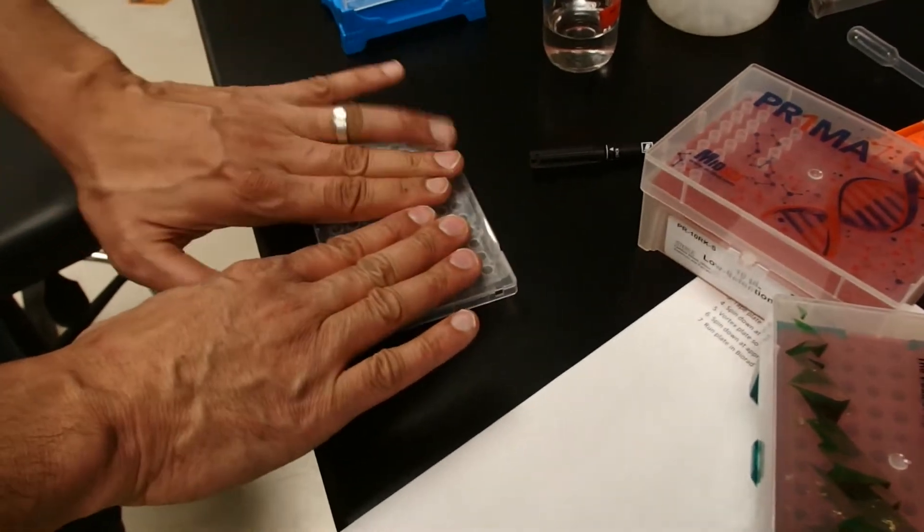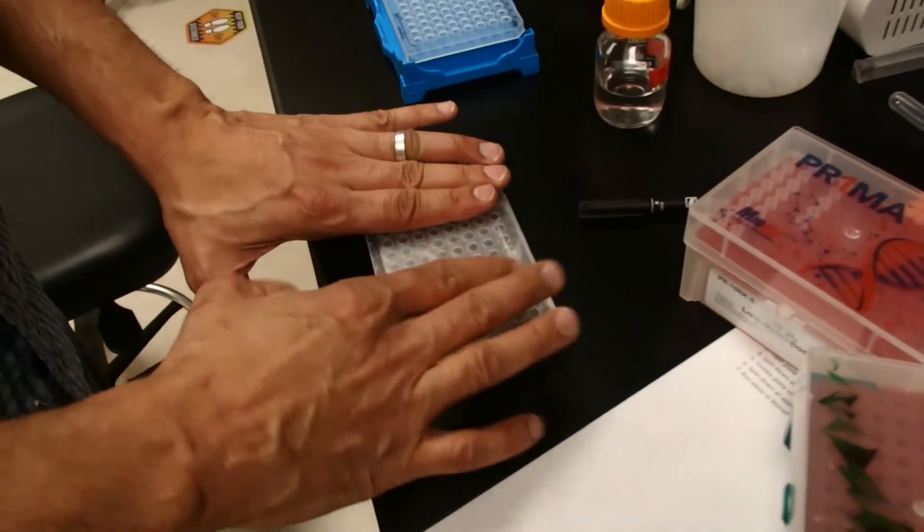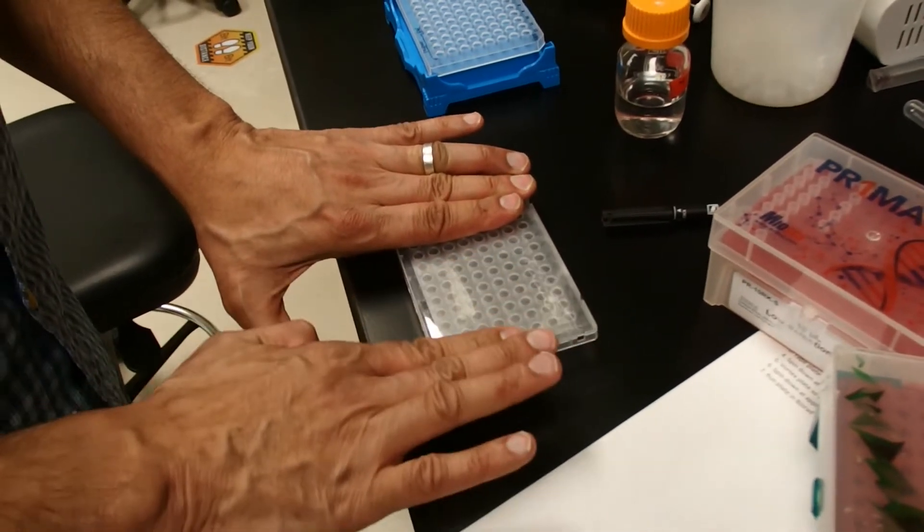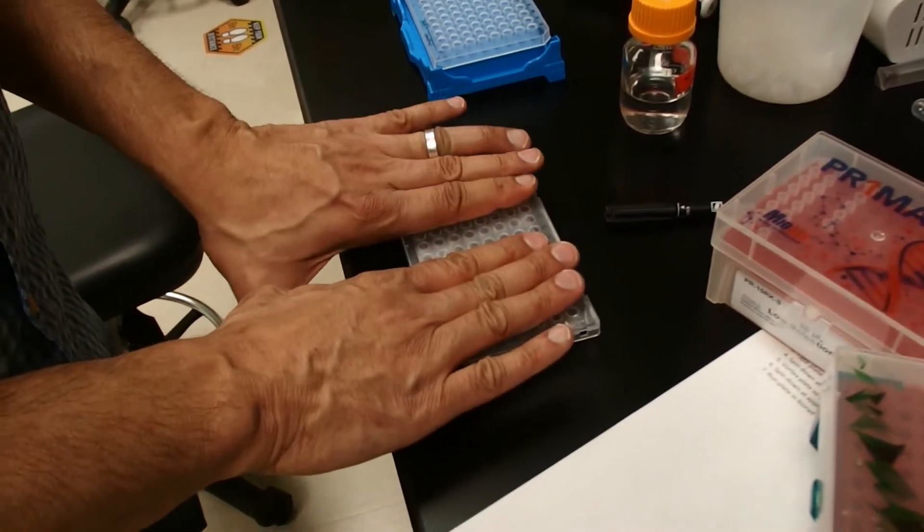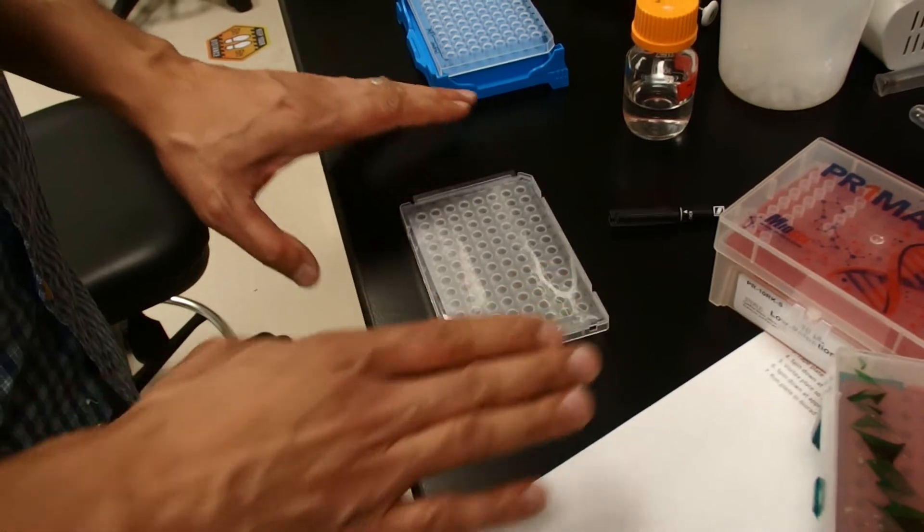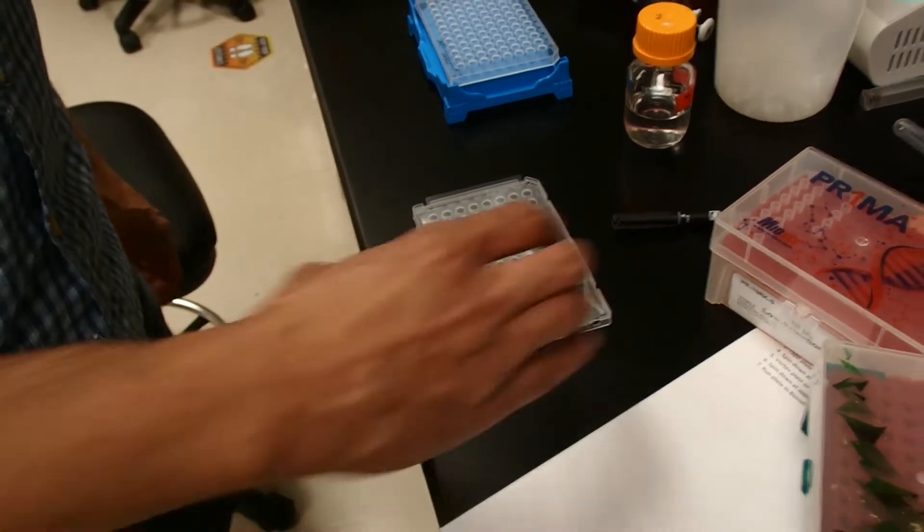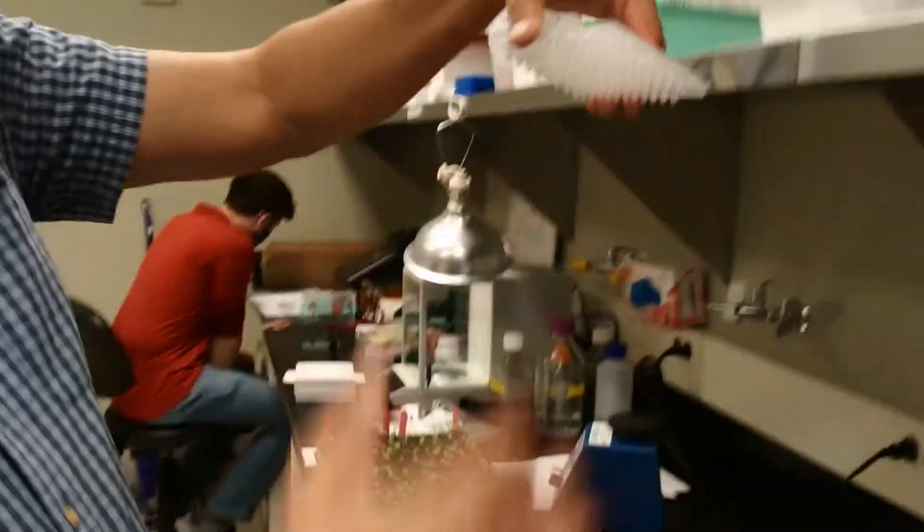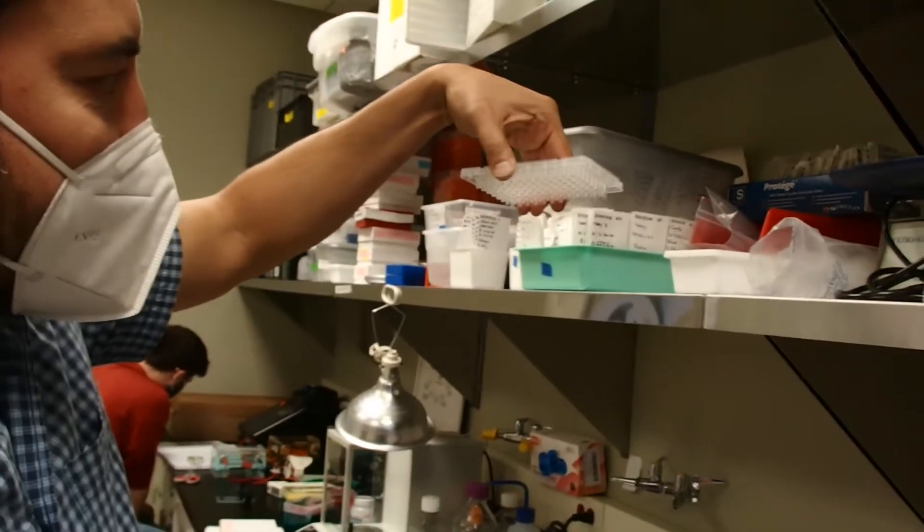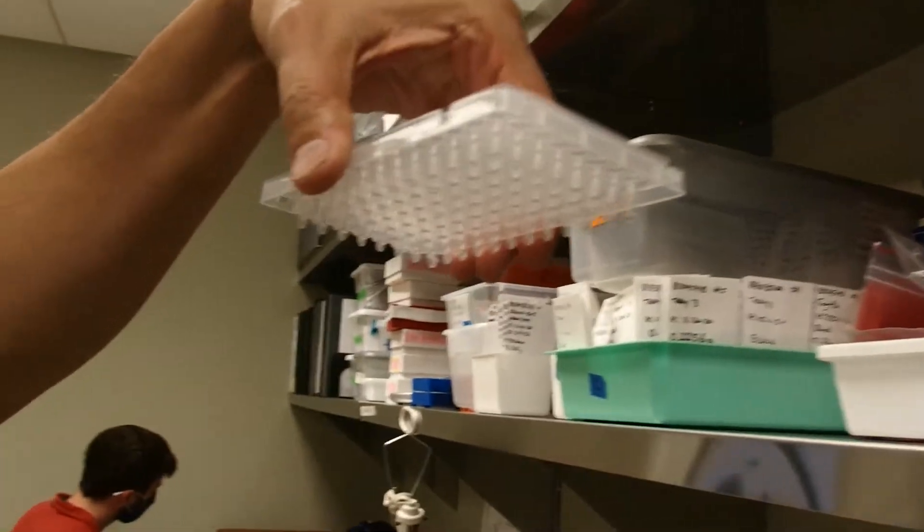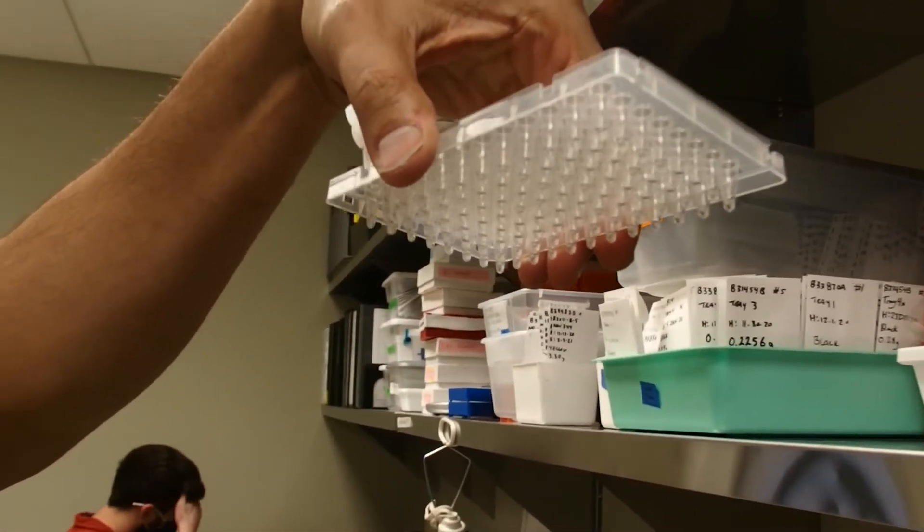This is what I have found is the best way to seal a qPCR plate. They have spreaders and all these things, but just a human touch seems to do a better job of sealing all the wells. Now we'll take this guy and we'll vortex it, spin it down, vortex it and spin it down again.